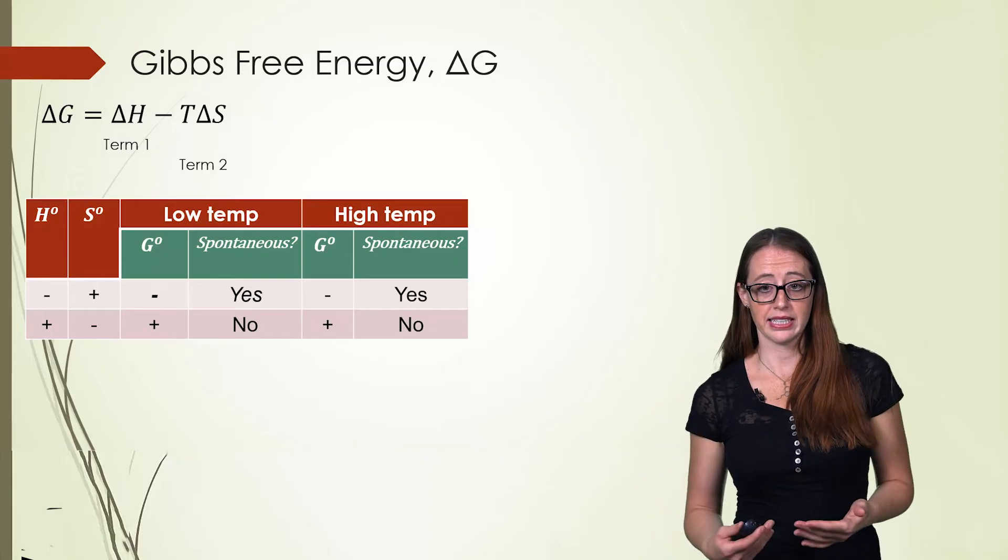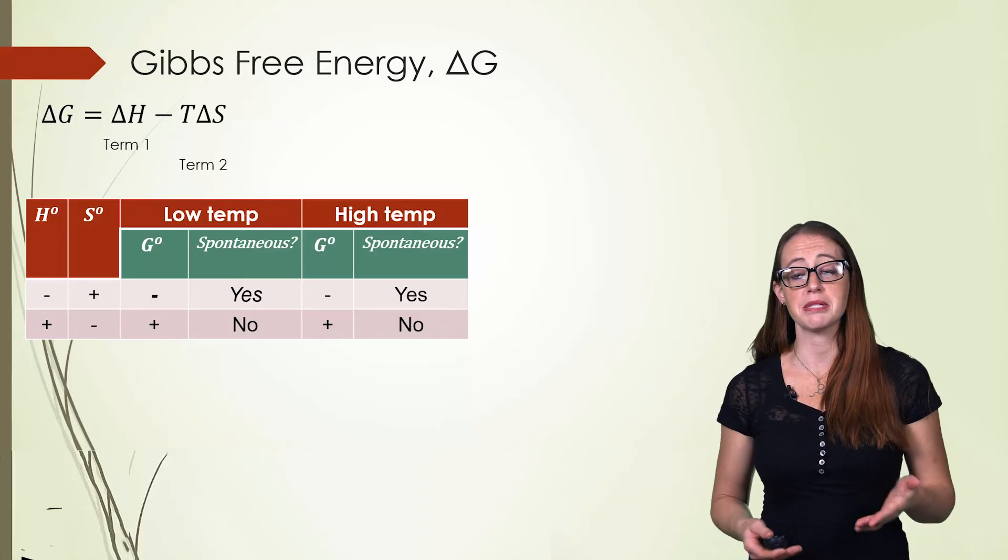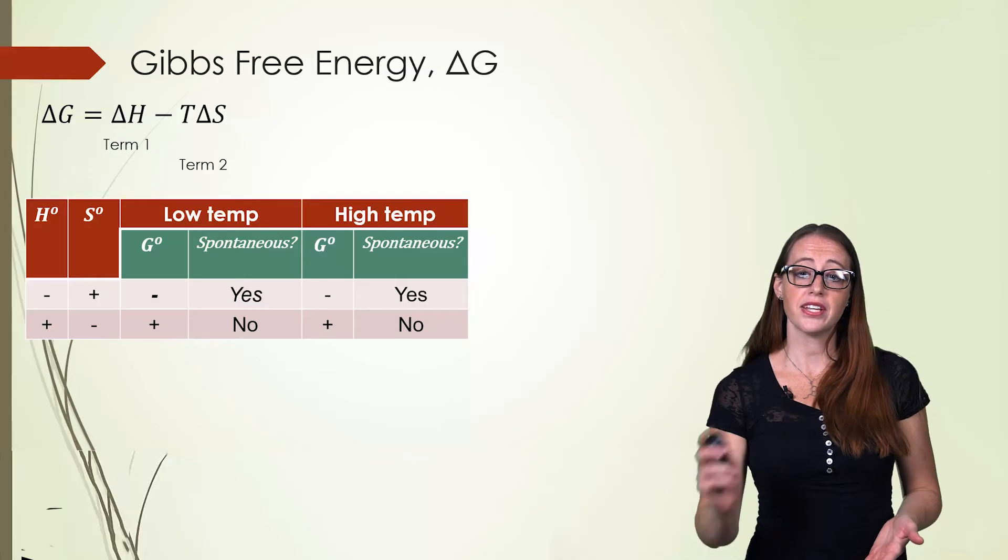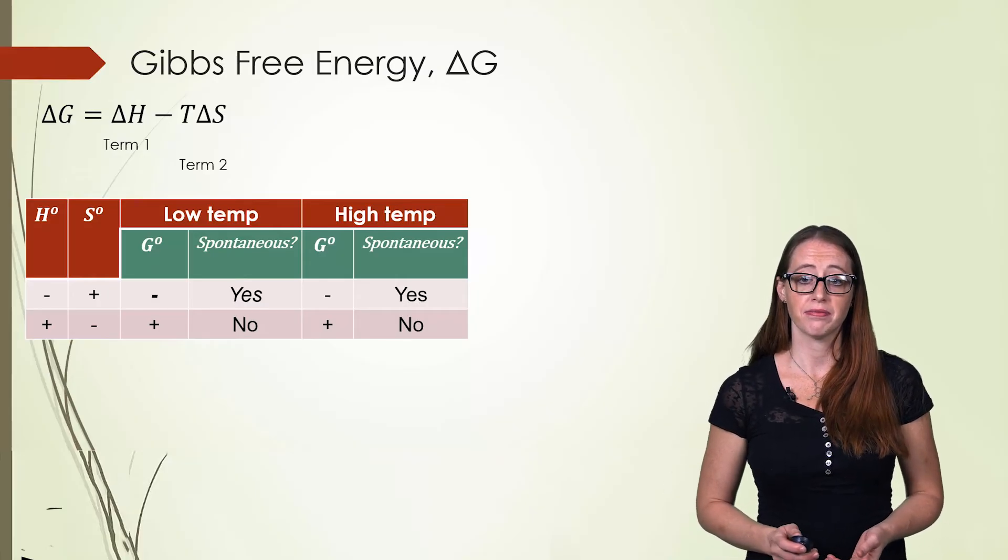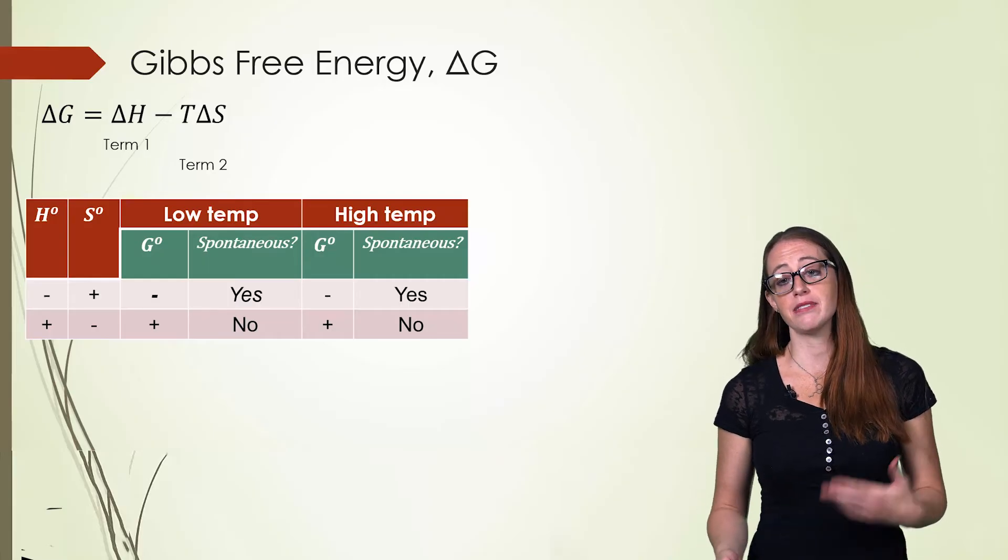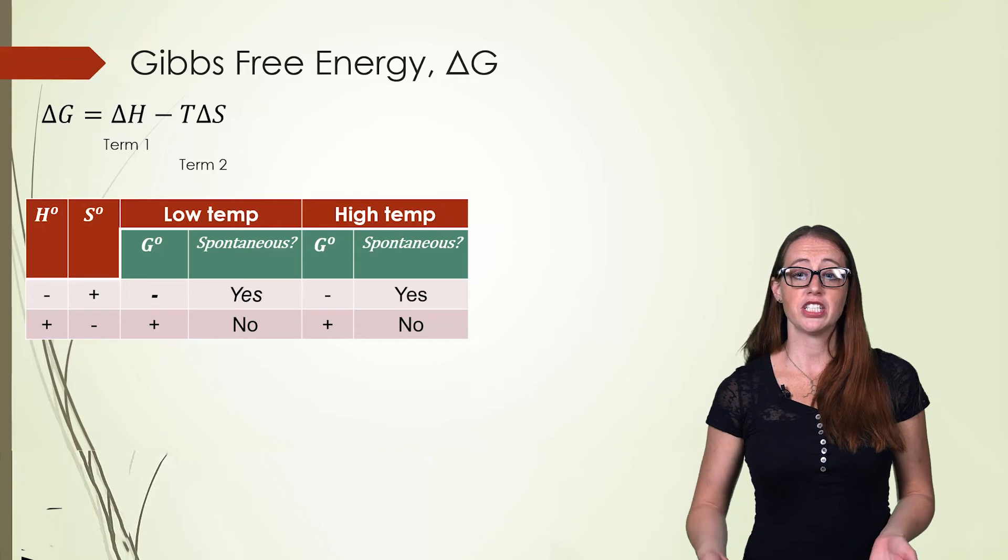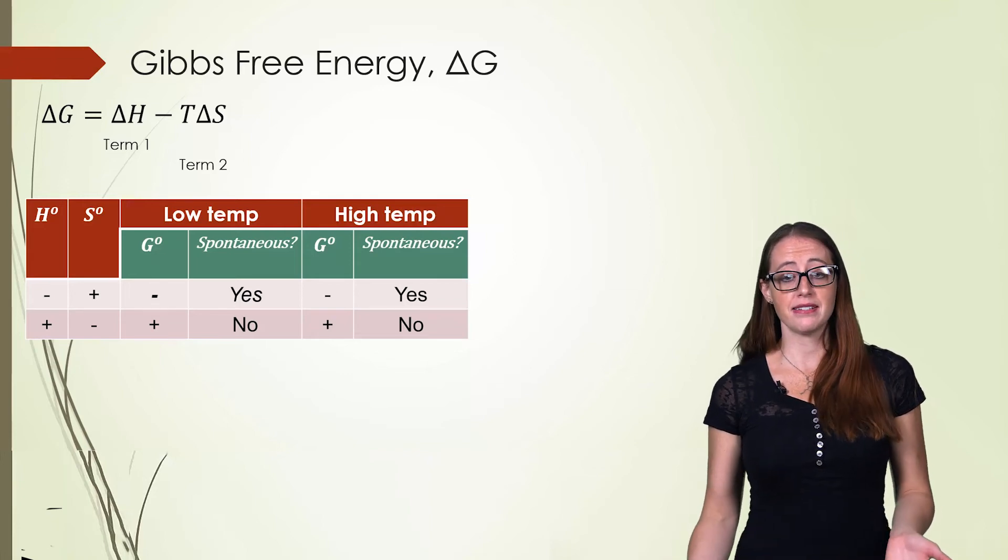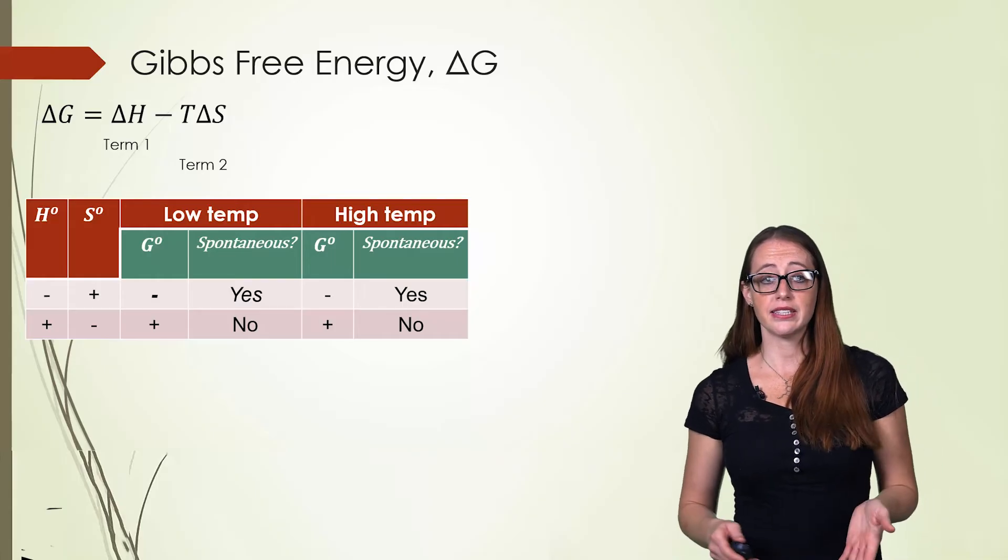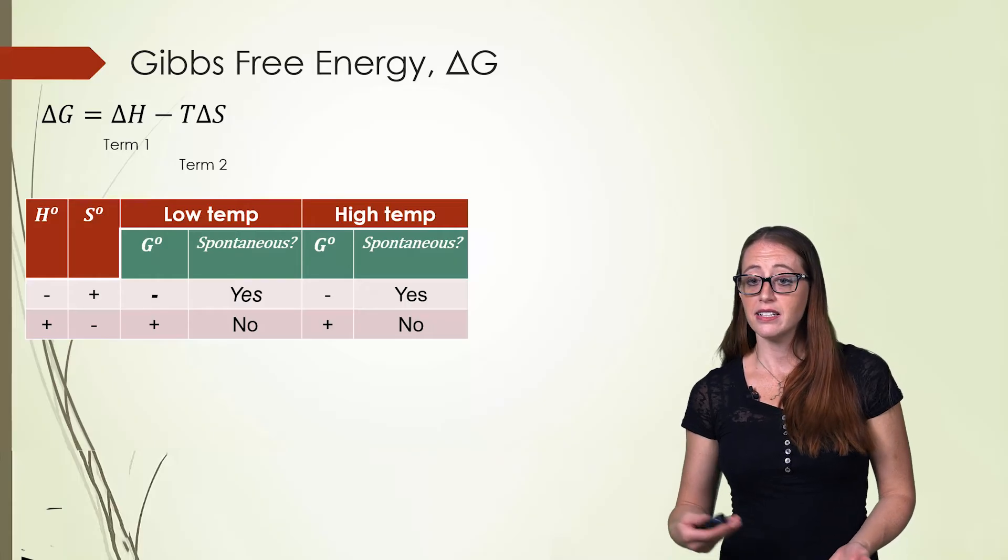Now let's look at the second line. If ΔH is positive, the first term of this equation must be positive. If ΔS is negative, then the second term must also be positive since two negatives equal positive. If both of these terms are positive, when you add them together, you're going to have a positive value, which means that ΔG must be positive. This means that it is non-spontaneous at all conditions. So by quickly looking at these sets of signs, you can decide if something is always spontaneous or never spontaneous.